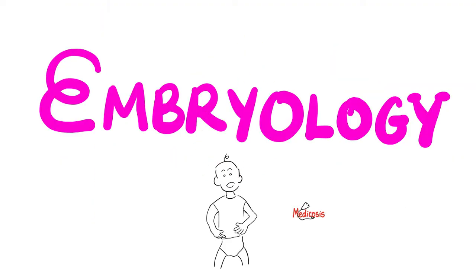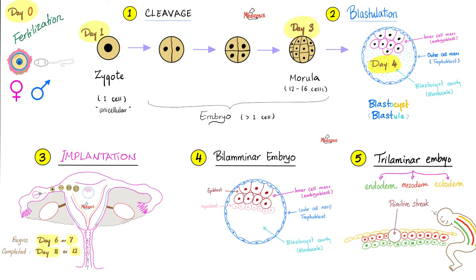But where do joints come from? Do you remember embryology? Egg meets sperm — zygote. Then divide and divide: morula, then blastula or blastocyst, then implanted into the posterior aspect of the uterus near the fundus. After that you are the bilaminar embryo, and before you know it you are three layers — the trilaminar embryo: endoderm, mesoderm, and ectoderm.